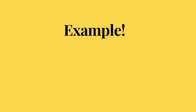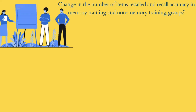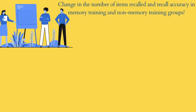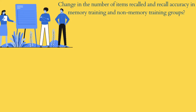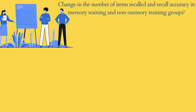Let's understand this better with an example. Imagine you're trying to discern the number of items recalled and the recall accuracy of those items based on the type of training your participants receive. You could subject the participants to a memory-specific training or a non-memory-specific training, such as a spatial skills training. For this study, you will recruit a sample of the population and then subject them to a specific learning task.